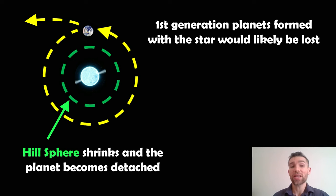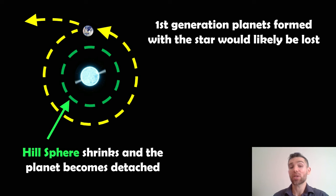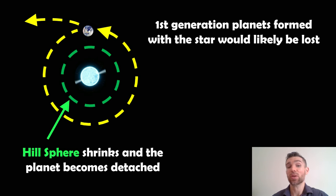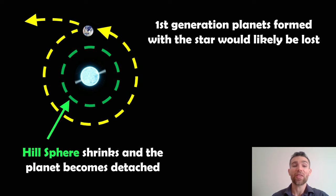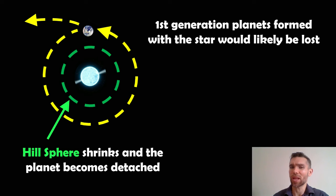Losing that much mass is a problem for any orbiting planets. Any first-generation planets — those that formed with the massive star and survived to the point of the supernova — would likely be lost anyway. This is because the hill sphere would shrink. The hill sphere is the gravitational sphere of influence around an object, within which a smaller object remains gravitationally bound. If the pulsar's mass decreases, that hill sphere shrinks, and any planets would no longer be gravitationally bound — they'd be lost into space.